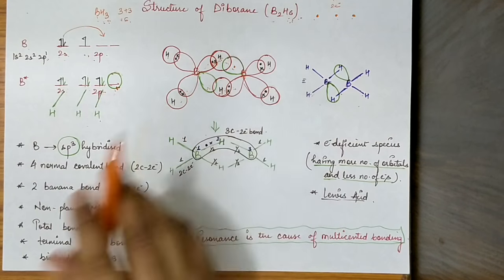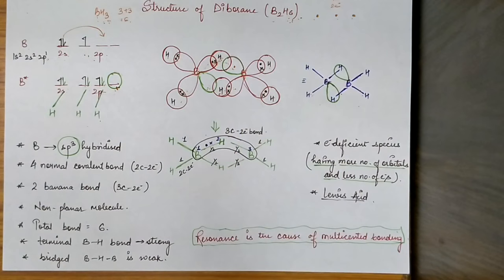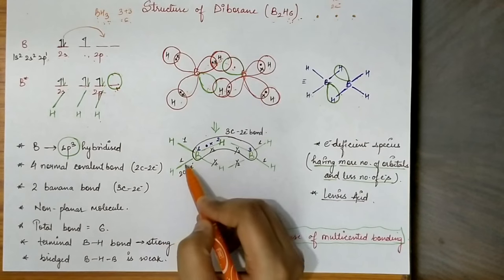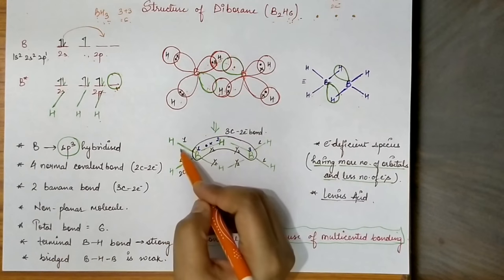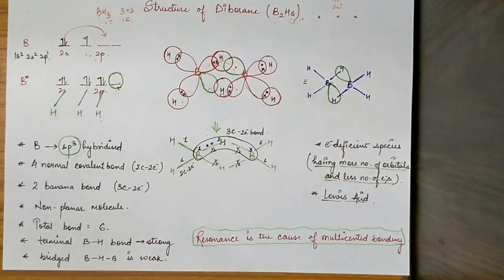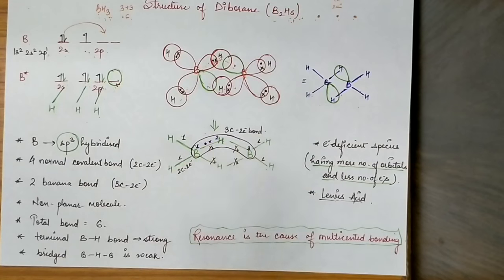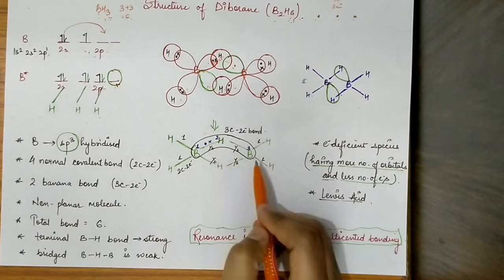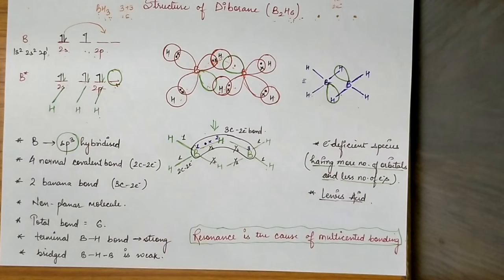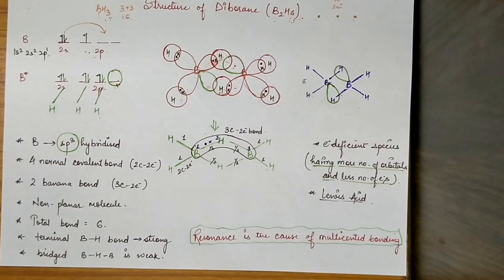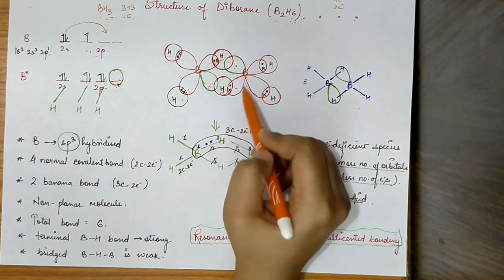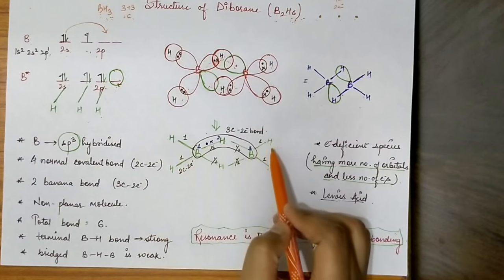You have to see how many centers are involved and how many electrons are involved to choose the correct option. The terminal boron–hydrogen bonds are normal covalent bonds. But the bridging bonds are what we call banana bonds — this type of bond is known as the banana bond. This molecule has 1 banana bond above and 1 banana bond below the plane — so 2 banana bonds total, and 4 normal covalent bonds.